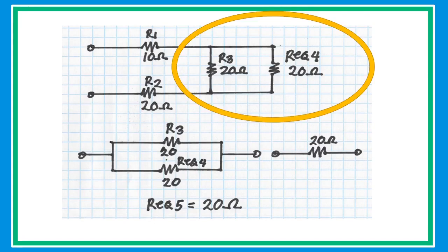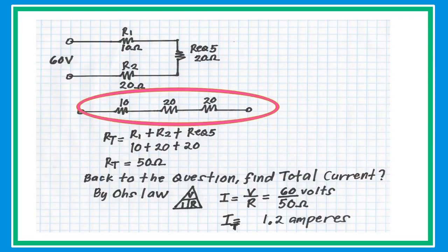Collapse and redraw again. In the new redrawn circuit, R3 and R4 are in parallel with the same value — get half of the value to get an equivalent resistance of 20 ohms. In the final simplified circuit, R1, R2, and R equivalent — all in series — are added together to get a total equivalent resistance of 50 ohms.